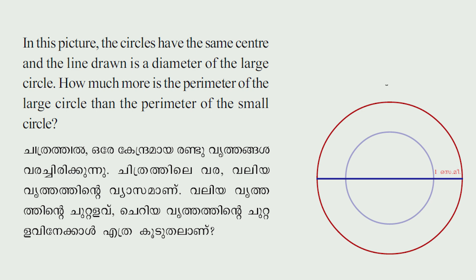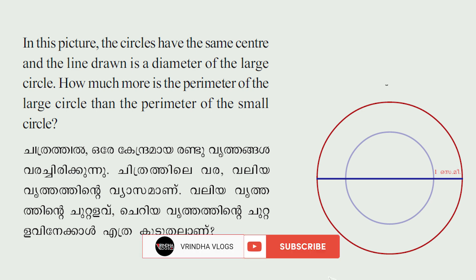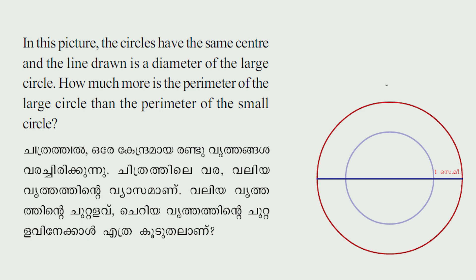In this picture, the circles have the same center and the line drawn is a diameter of the large circle. How much more is the perimeter of the large circle than the perimeter of the small circle?